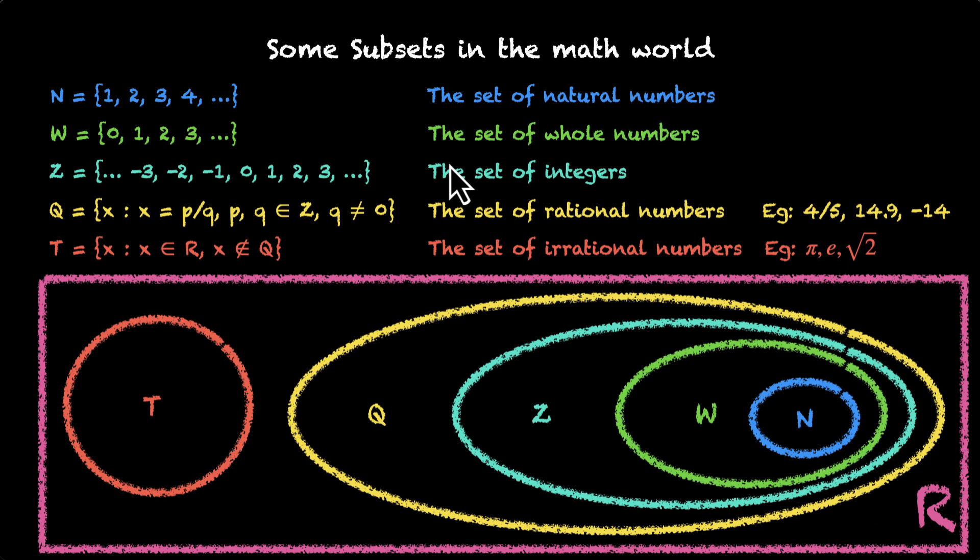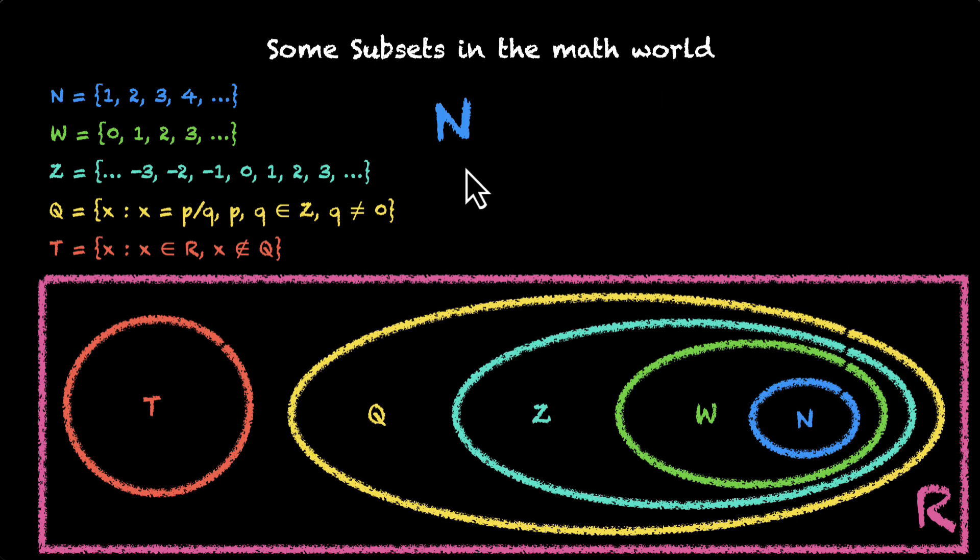Now let's use the subset notation to connect all of these sets. The smallest set is n and this n is a subset of w. Natural numbers are subset of whole numbers. And w is a subset of z. The set of whole numbers is a subset of the set of integers. Z is a subset of q.